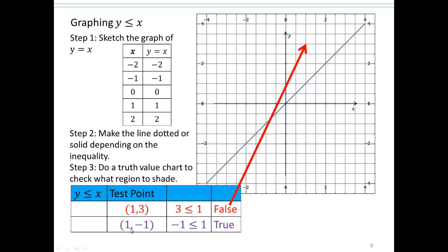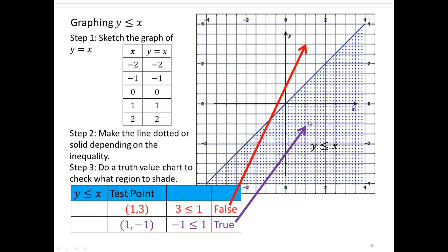This would be not part of your solution, which means you're going to shade everything under. You can take another test point, say 1, negative 1. So x is 1 and y is negative 1, and that gives you a true statement. So you're going to shade that region for y less than or equal to x. That means your solution set is all these points that are either on the line or below the line.